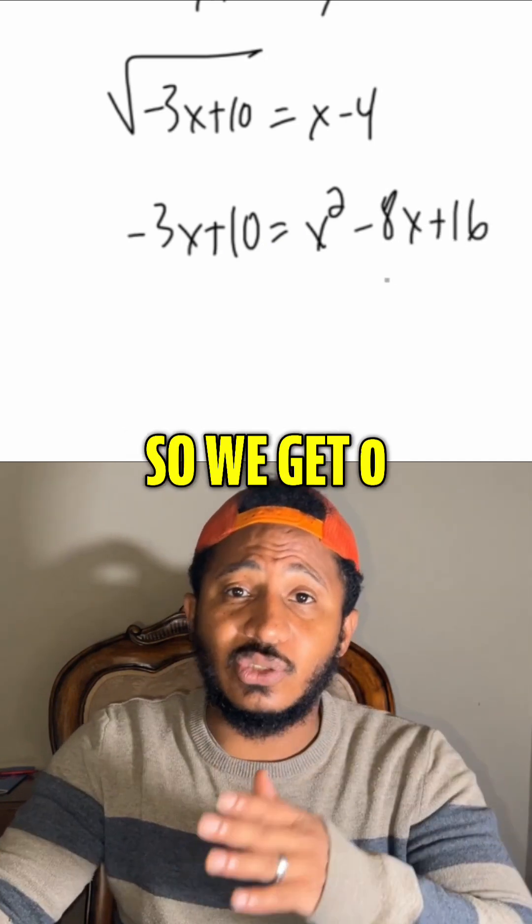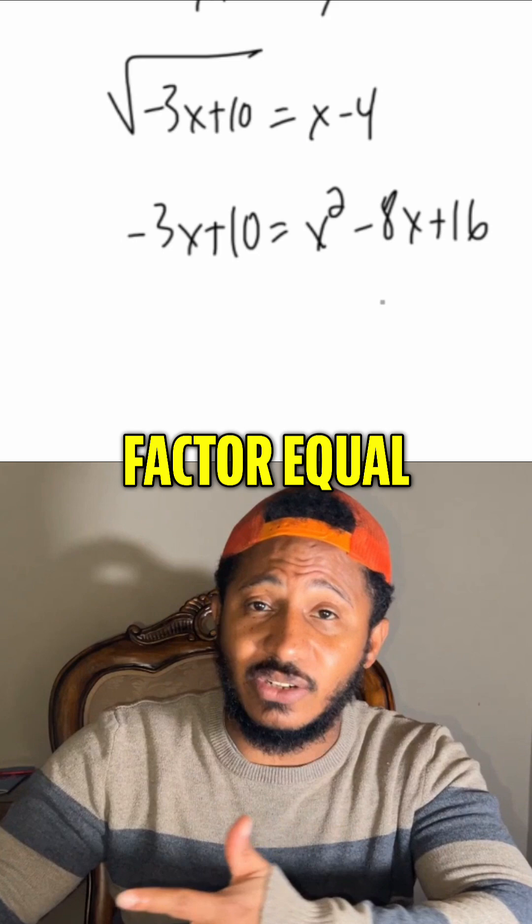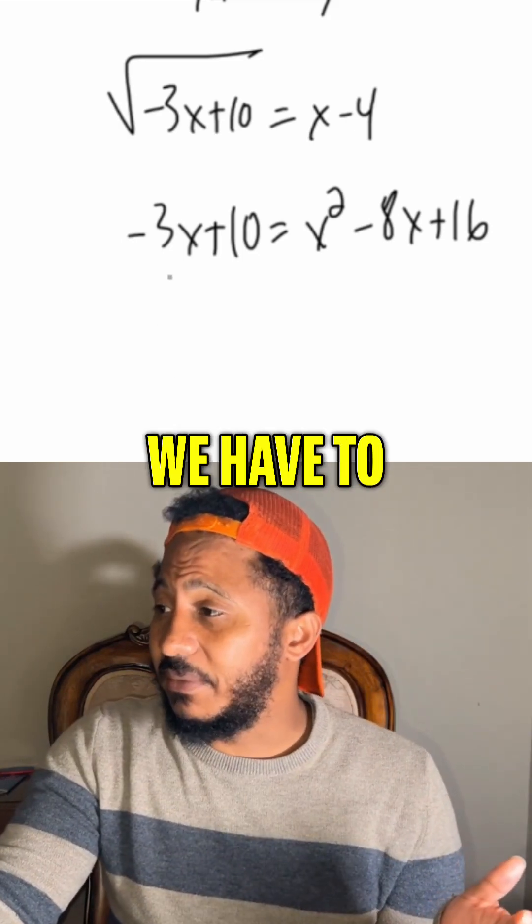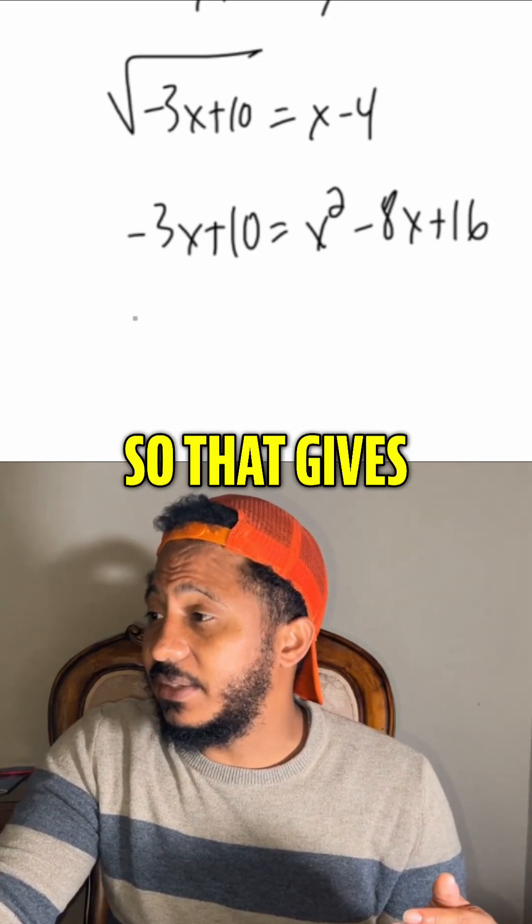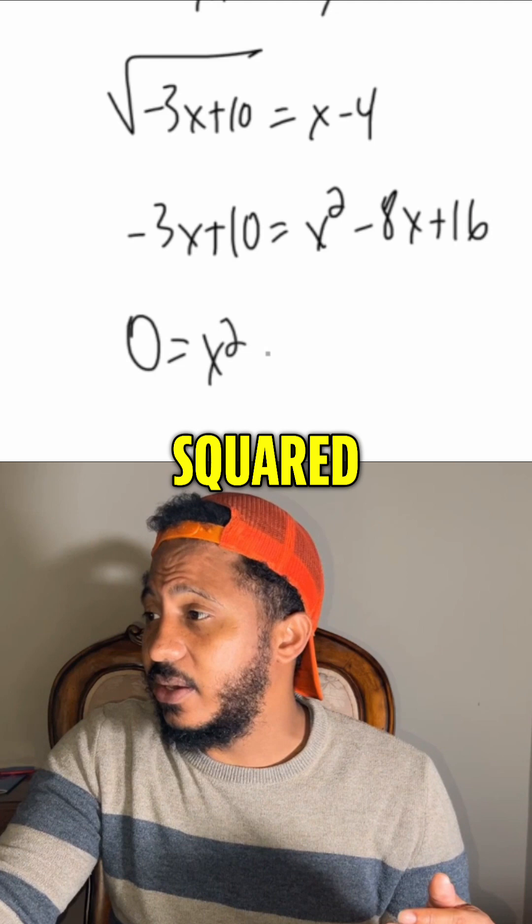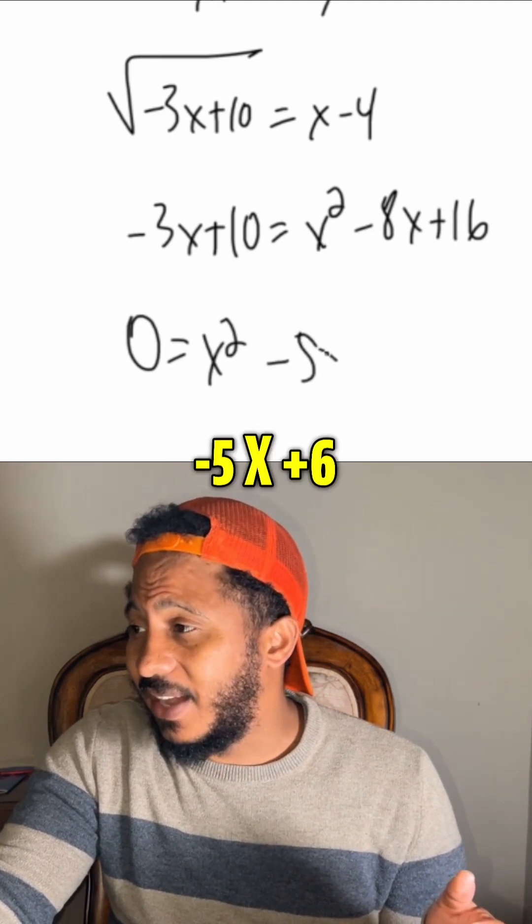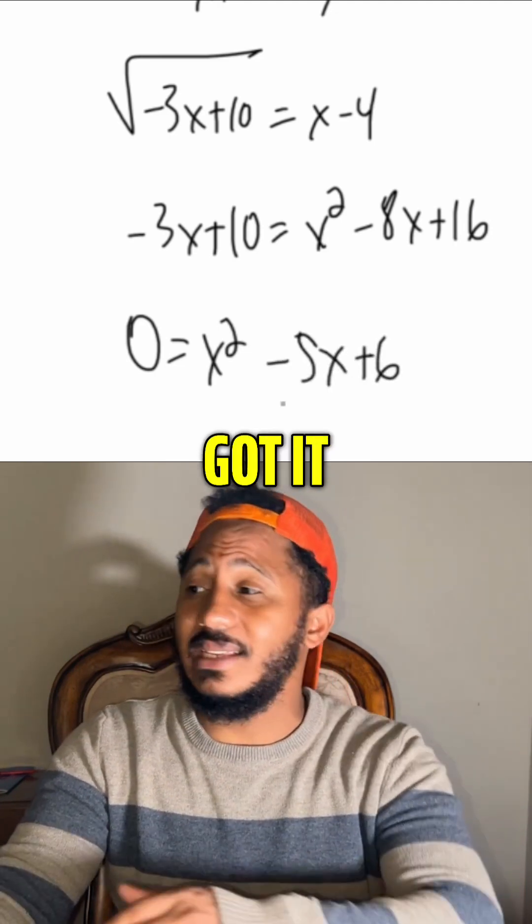Now it's a quadratic, so we get 0 on one side, factor the other side, set each factor equal to 0. So getting 0 on one side, we have to add 3x and then subtract 10. So that gives us 0 equals x squared minus 5x plus 6.